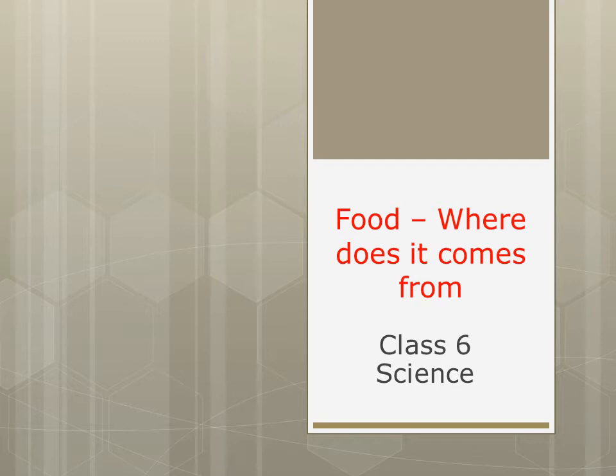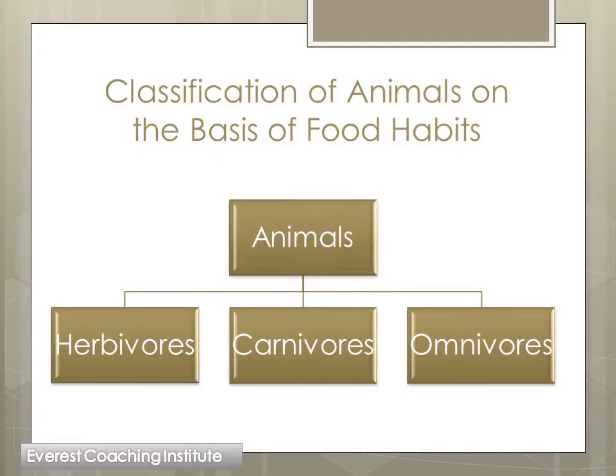In this video we will move ahead. So far we have discussed only plants and animals as food sources. Now in this video we will discuss the classification of animals on the basis of food habits. Animals, according to their food habits, are divided into three groups: first is herbivores, second is carnivores, and third is omnivores.